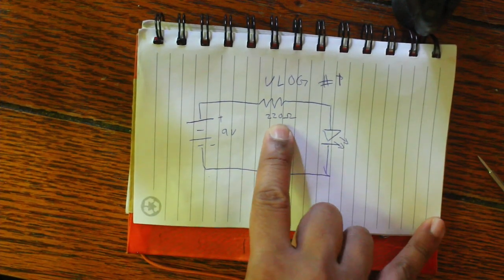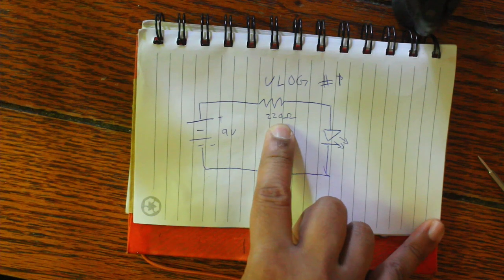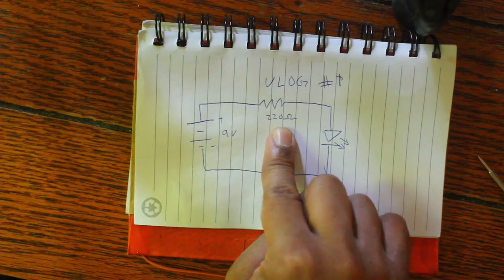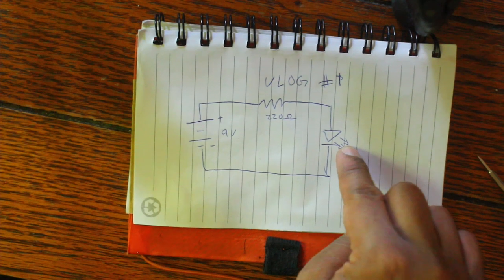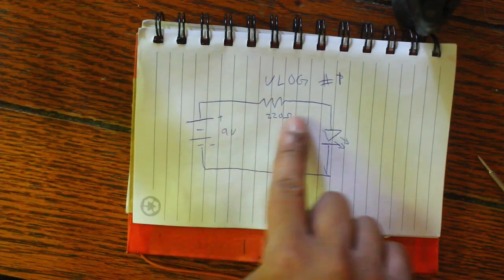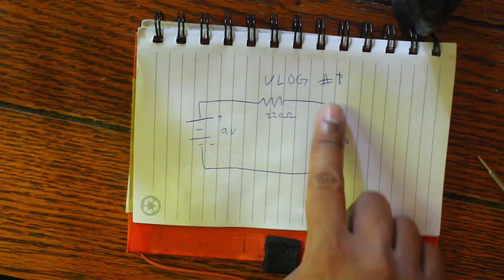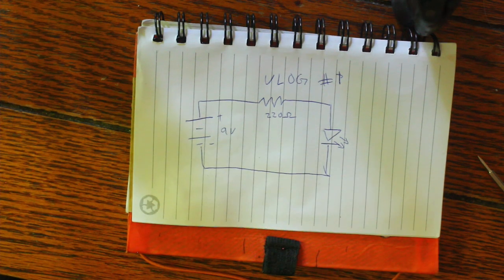220 ohm is pretty much the least amount of resistance I can get without burning out my LED over here, which is over here, so we got here. This is a resistor. This is an LED. And that's the circuit, and so yeah, that's pretty much it for now.